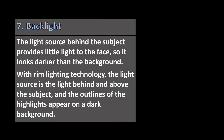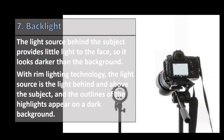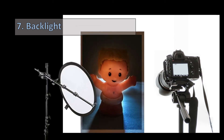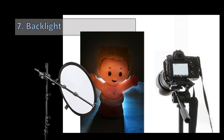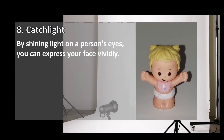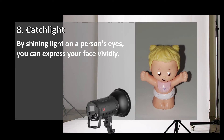7. Backlight. The light source behind the subject provides little light to the face, so it looks darker than the background. With rim lighting technology, the light source is behind and above the subject, and the outlines of the highlights appear on a dark background. 8. Catch Light. By shining light on a person's eyes, you can express your face vividly.